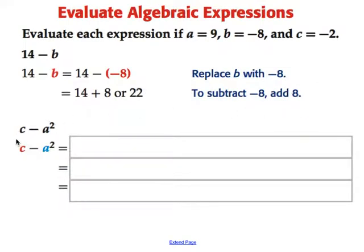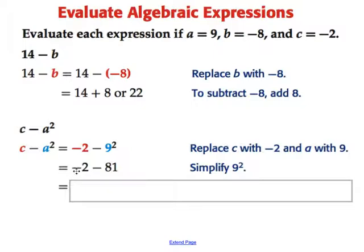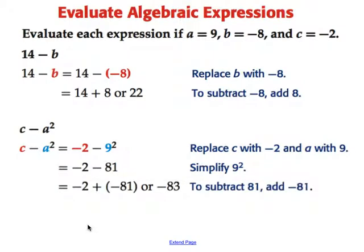In the second example, we have C minus A squared. So we're going to replace C with the number negative 2. We will replace the letter A with the number 9. So first off, we're going to do that substitution. Now we need to evaluate using our order of operations. We know that all exponents get done before any subtraction. So 9 to the second power means 9 times 9, and that's 81. So we have negative 2 minus 81. Both of these are negative now. So negative 2 minus 81 gives us a negative 83.